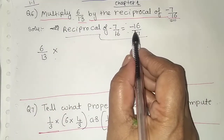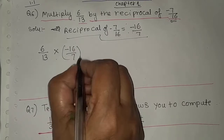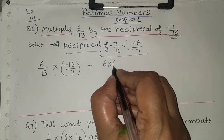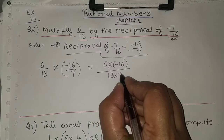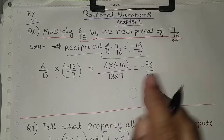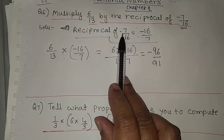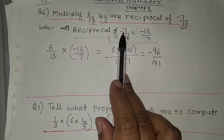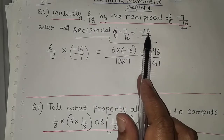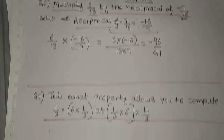The reciprocal of minus 7/16 is minus 16/7. Multiplying: 6 into minus 16, divided by 13 into 7, gives minus 96/91. So this is the solution for question 6. The reciprocal swaps numerator and denominator while the negative sign remains the same, and then we multiply by the other number.